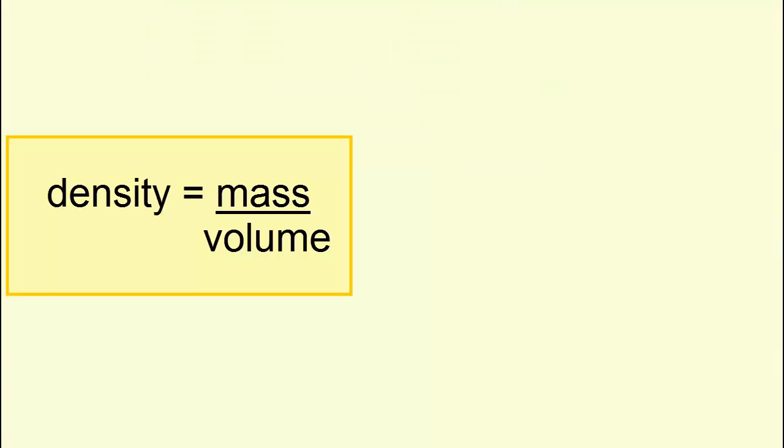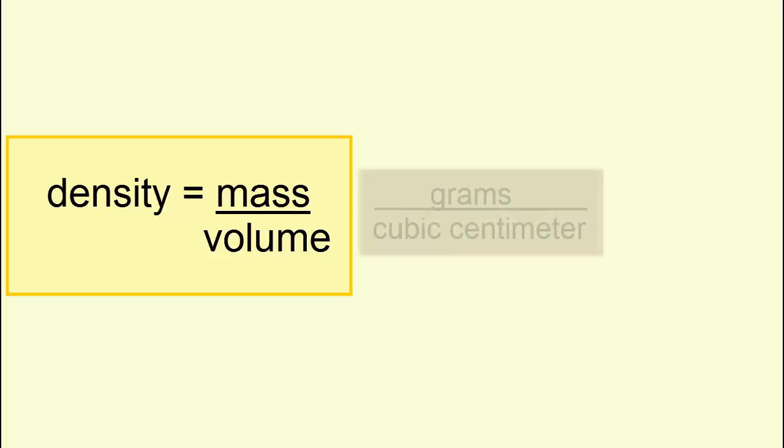Density is the ratio of an object's mass to its volume. It is not simply mass or weight. It's mass per unit of volume, grams per cubic centimeter or kilograms per liter.